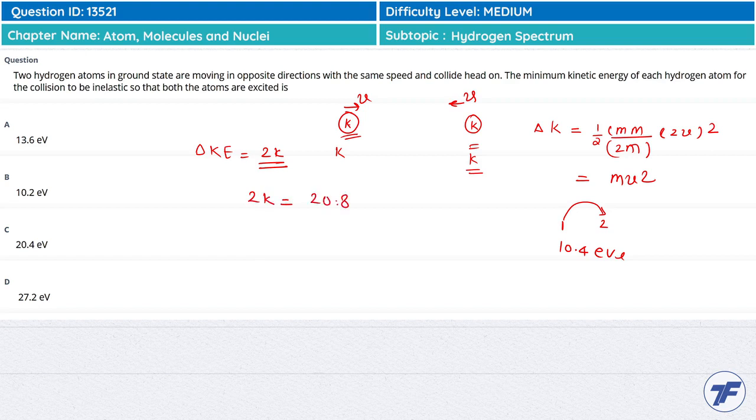The minimum kinetic energy each should have is 10.2 electron volts. So the kinetic energy each needs is 10.2 electron volts.